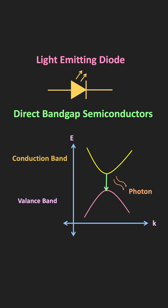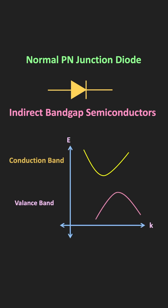But that is not the case with the normal P-N junction diode, because these diodes are made up of either silicon or germanium. These semiconductor materials are known as indirect bandgap semiconductors, meaning that in these materials, if we see the energy versus momentum curve, the top of the valence band and the bottom of the conduction band are not aligned. Due to this different value of momentum, to conserve the momentum for the electron-hole recombination process, the electron first needs to transfer the momentum to the crystal lattice, which causes lattice vibration in the structure.